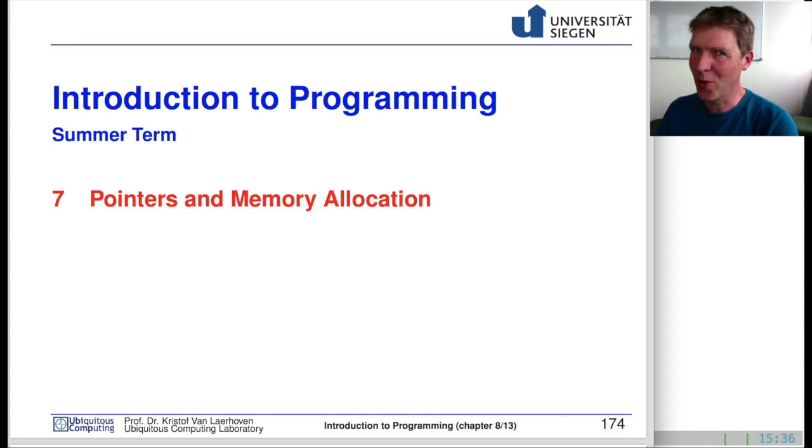Welcome back to Introduction to Programming. Today we're going to start with the seventh chapter, which is the most difficult chapter for C and C++ programming. It's about pointers and memory allocation.